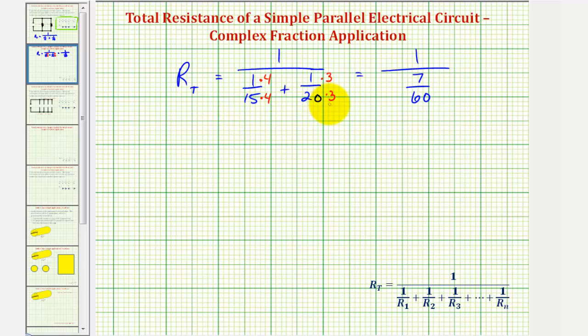Notice how both denominators are sixty, so we can add the numerators. Four plus three is equal to seven. Well, the reciprocal of seven-sixtieths would be sixty-sevenths, or we could also say that r sub t is equal to one divided by seven-sixtieths, which is equivalent to one times sixty-sevenths. So the total resistance is sixty-sevenths ohms.